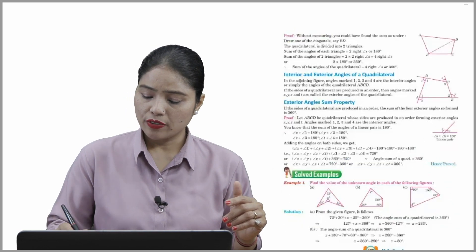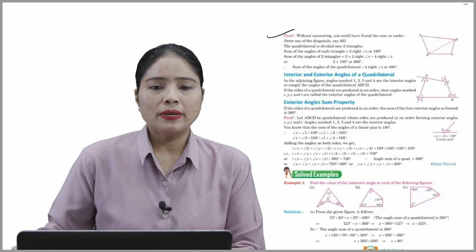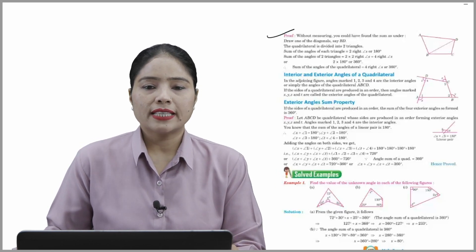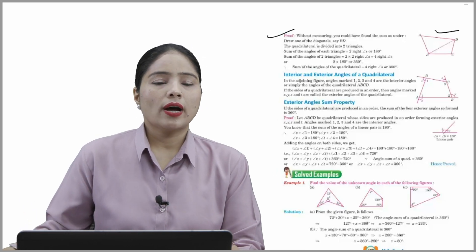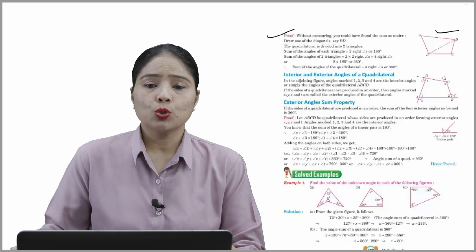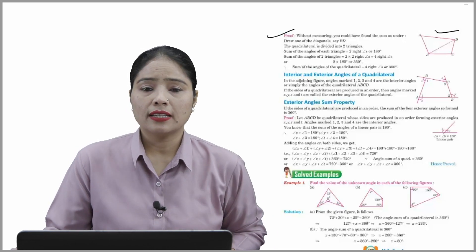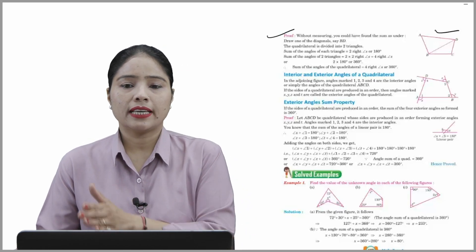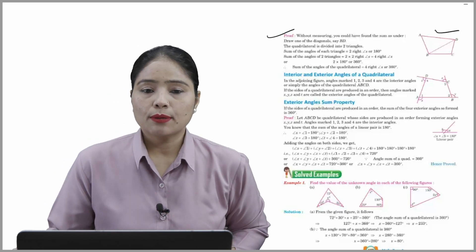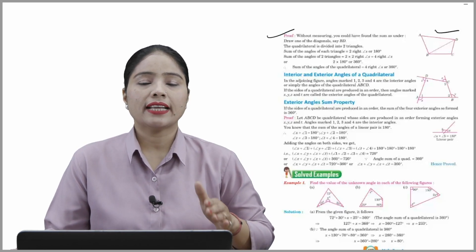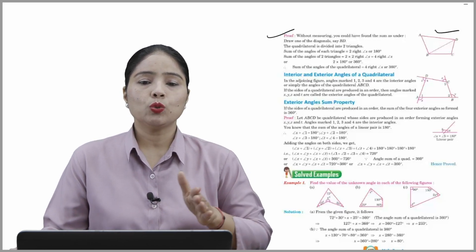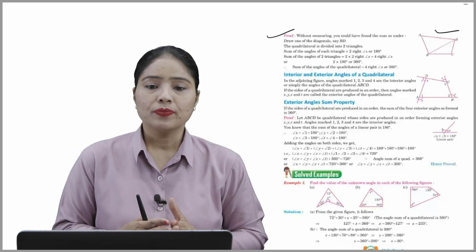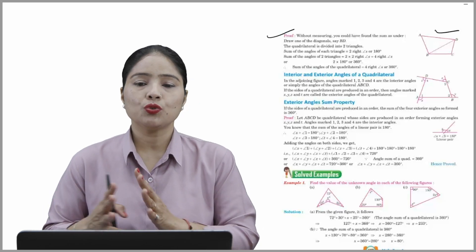Proof without measuring: draw one of the diagonals, say BD. The quadrilateral is divided into two triangles. The sum of the angles of each triangle is equal to two right angles, i.e., 180°. The sum of angles of both triangles is 2 × 180° = 360°. Therefore the sum of all four angles of the quadrilateral equals 360°.